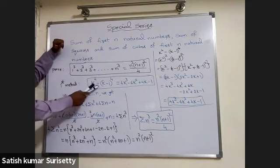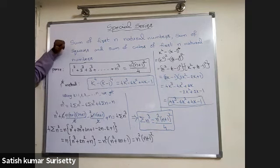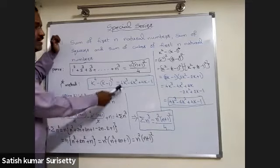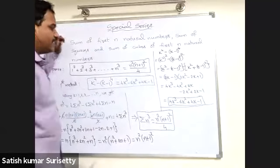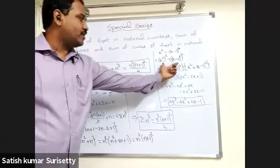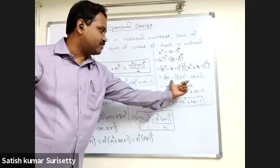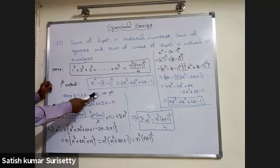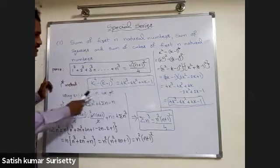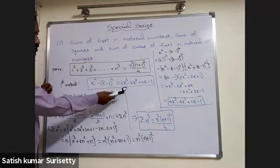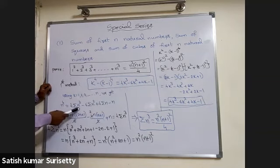Consider k to the power 4 minus k minus 1 whole to the power 4 — the consecutive difference of fourth powers. Simplifying gives 4k cubed minus 6k squared plus 4k minus 1. Substitute k equal to 1, 2, 3 and so on n, and add all n equations. The left side gives n to the power 4, and the right side gives 4 into sigma n cubed minus 6 into sigma n squared plus 4 into sigma n minus n.